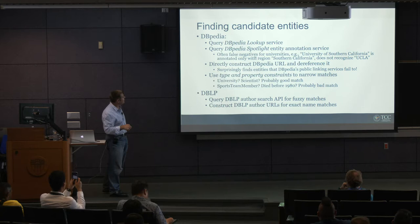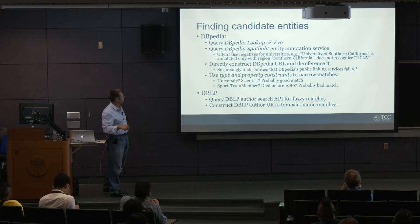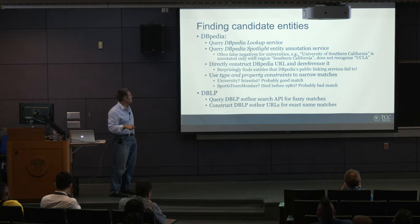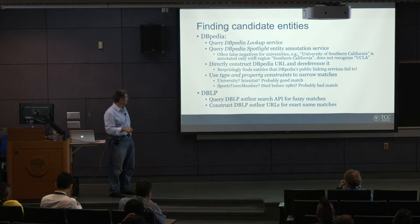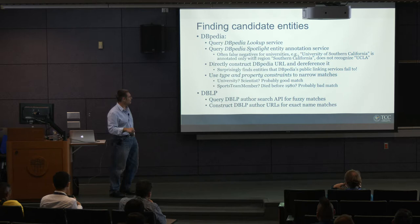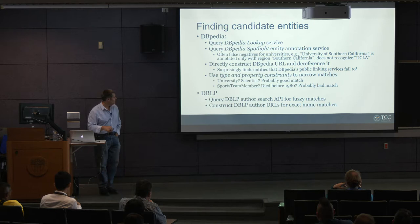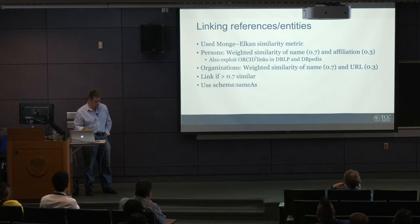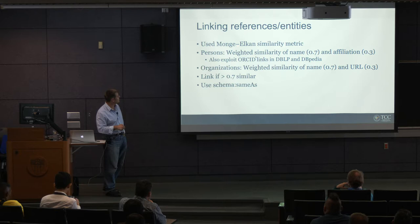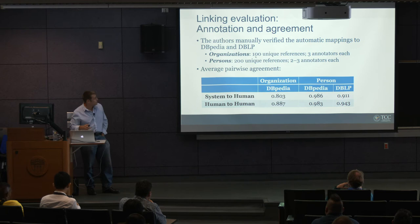We de-deduplicate different mentions within the dataset, map from our data to DBpedia and to DBLP, and make sure that if we match to the same object, DBpedia and DBLP are also consistent. We use simple record linkage techniques — string similarities like Jaro-Winkler. For DBpedia there's already a lookup service and Spotlight for entity annotation. We use some constraints — if we get a match for a person in DBpedia and they're a university scientist, it's probably a good match; if they're a sports team member or died before 1980, it's probably a bad match.